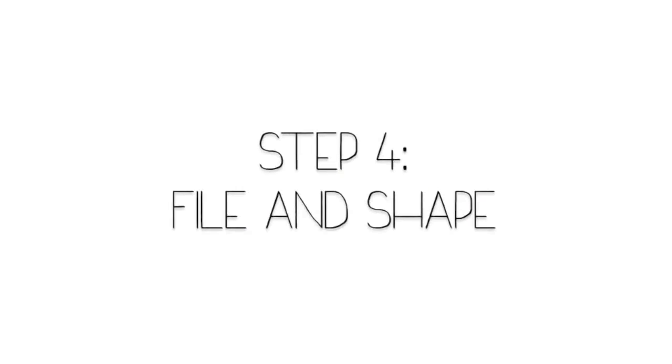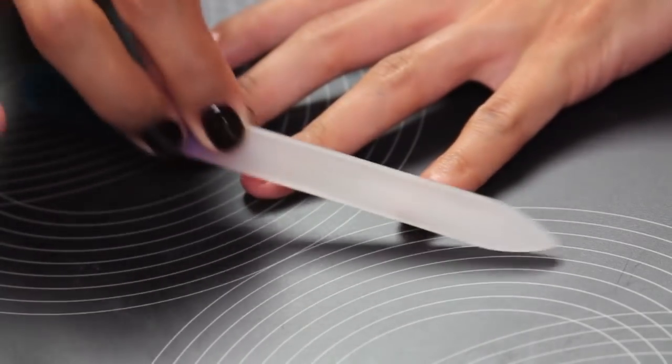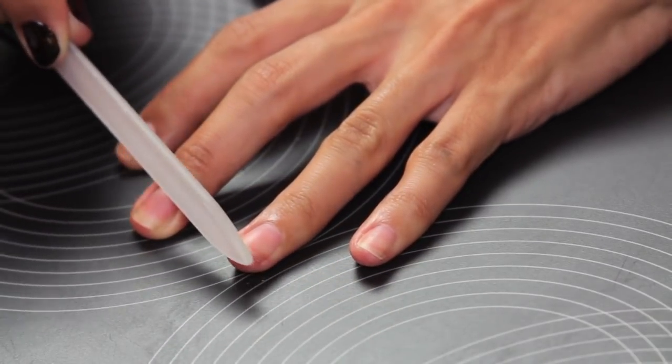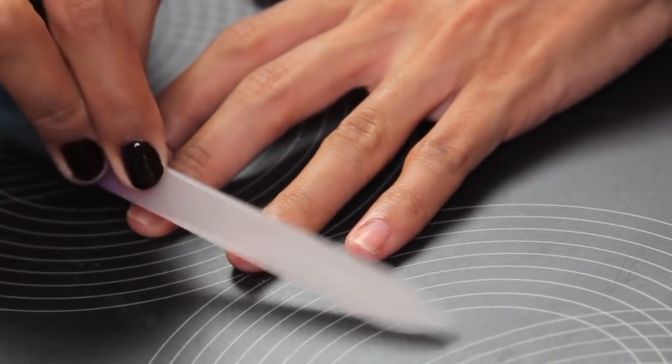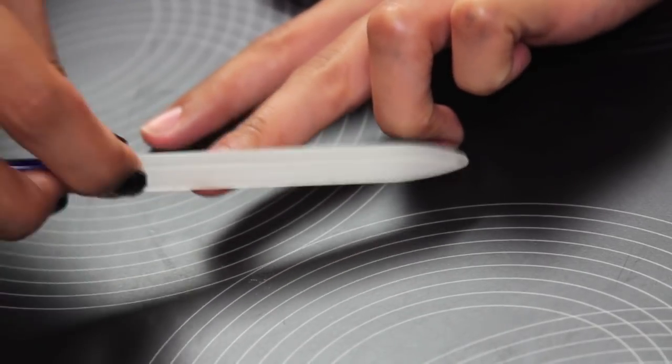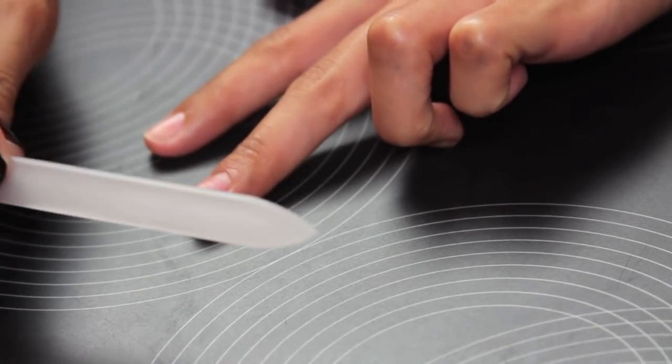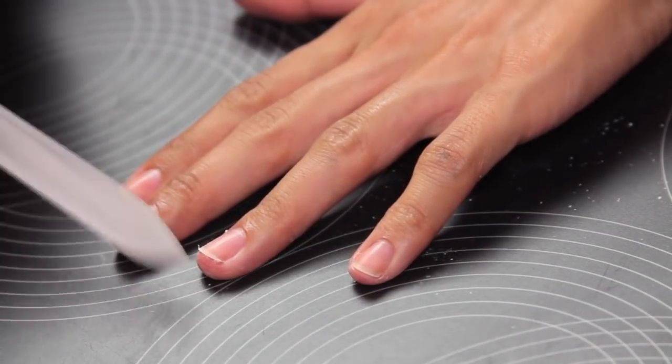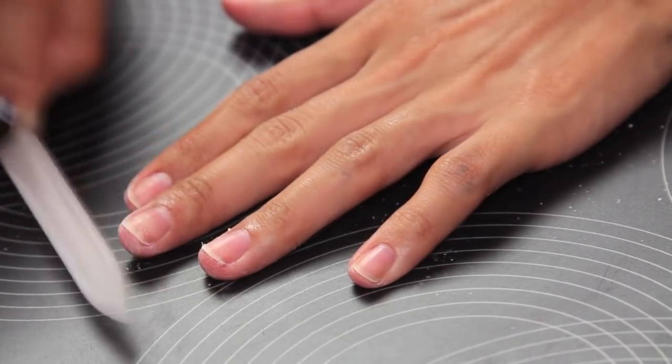Step four is file and shape. I'm starting off with this file, which I bought at Old Navy, but it kind of tends to wear off really fast. But I'm just going to shape my nails—I used to like them squared off, but I actually prefer them rounded off because it makes my hands look a lot more feminine. And I'm also going to buff away any shine so I can get them ready for the nail polish.